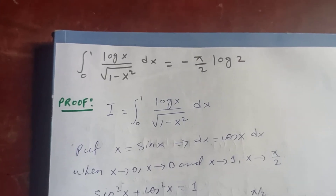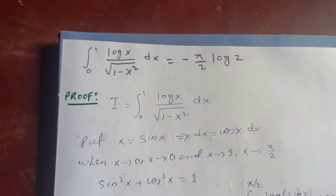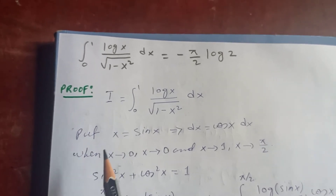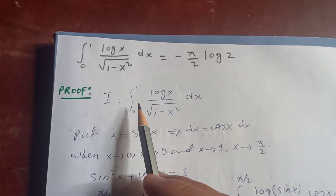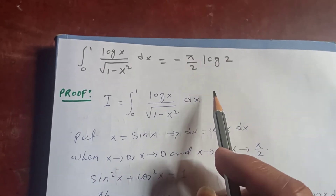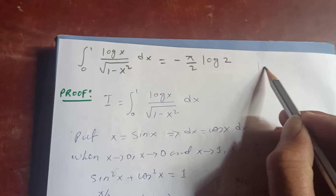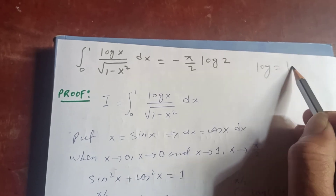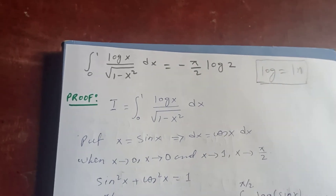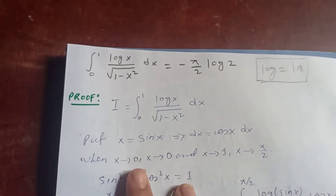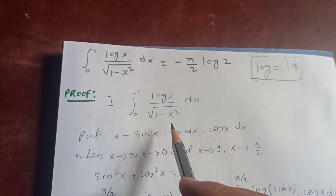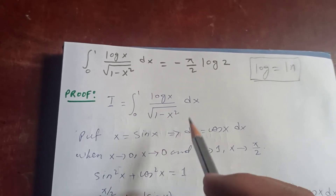Thanks for watching my video today. Let's try to prove this integral: the integral from 0 to 1 of log(x) upon square root of (1 minus x squared) dx equals negative pi by 2 times log 2. Note that this log is the natural logarithm. Let our integral be I, which is the integral from 0 to 1 of log(x) upon square root of (1 minus x squared) dx.